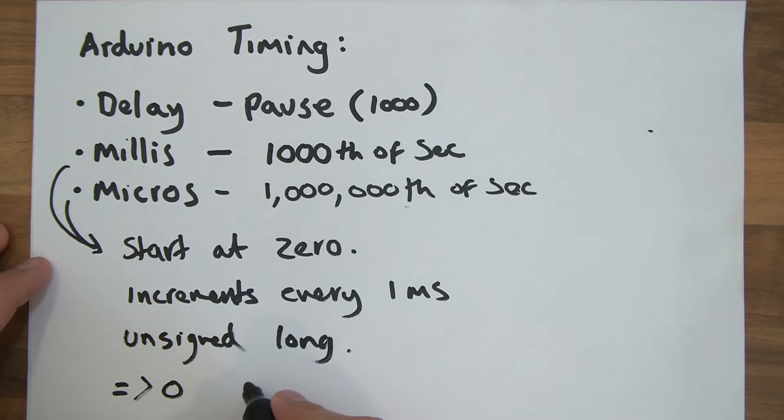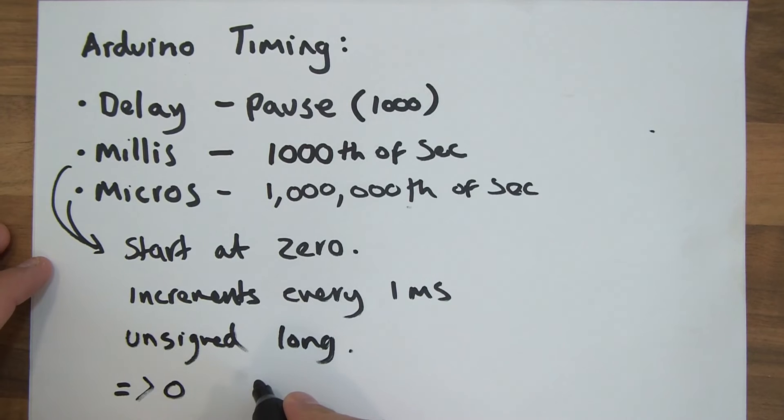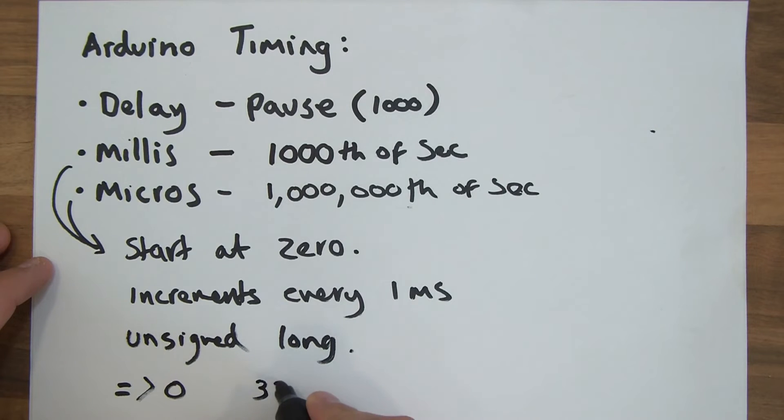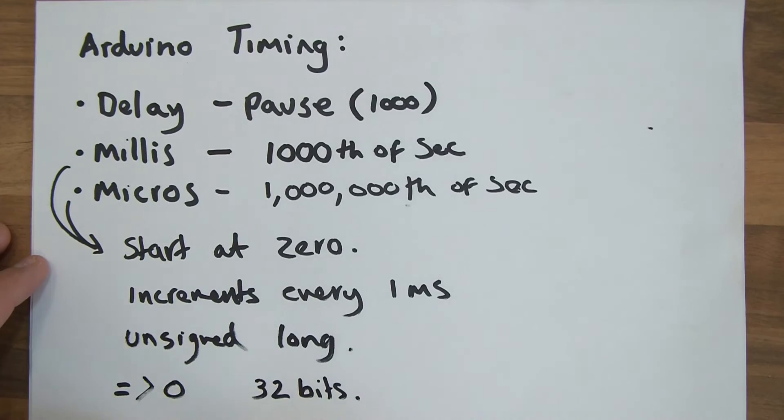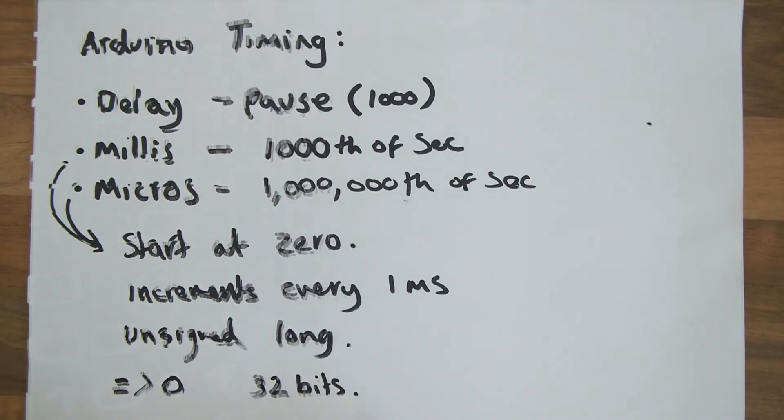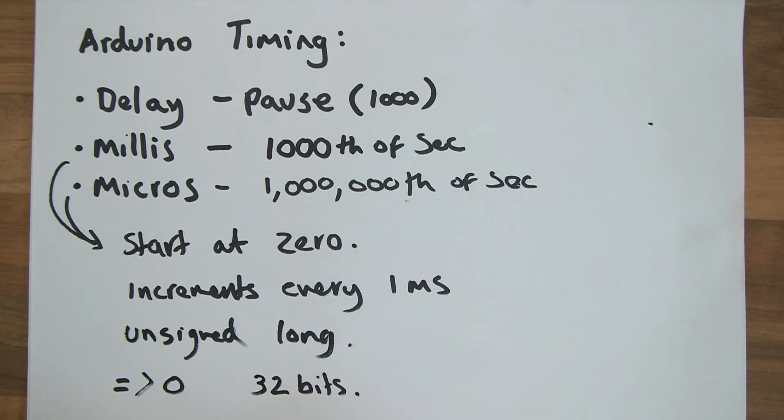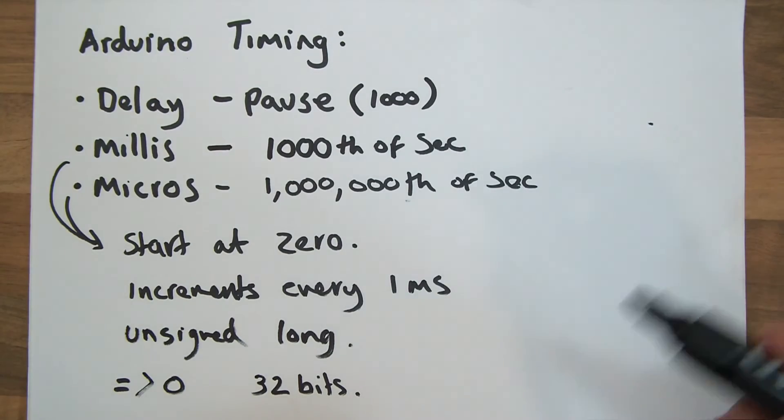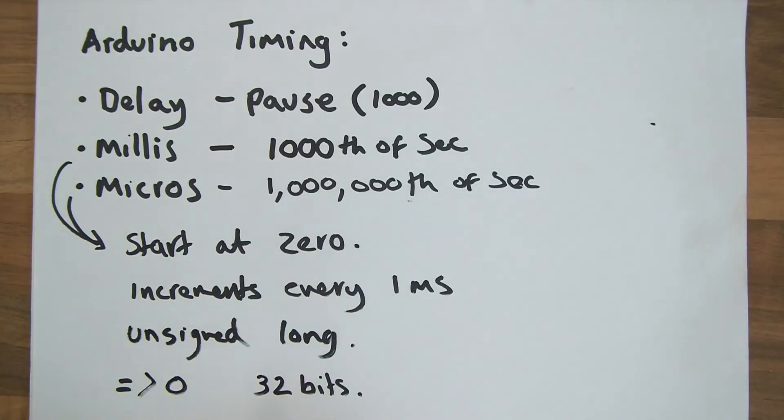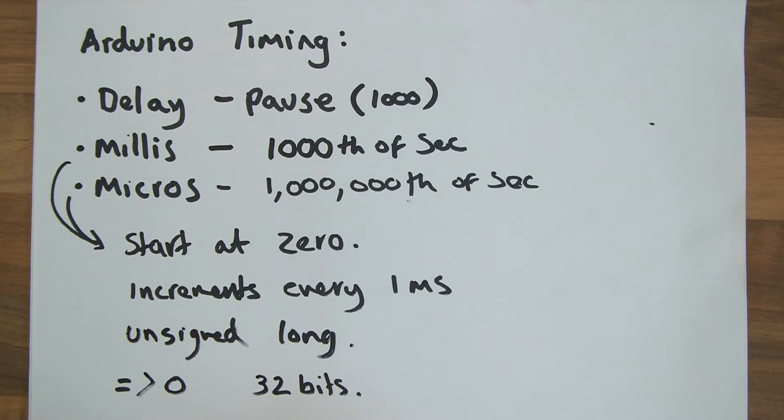And long simply means that the variable holds 32 bits to store its value. And 2 to the power of 32 is around about 4 billion or something. So it can store that amount of numbers. So basically it will go up to about 4 billion and then it will overflow. And overflow means that it will just start again. So yeah, so there are the basics of millis and micros.